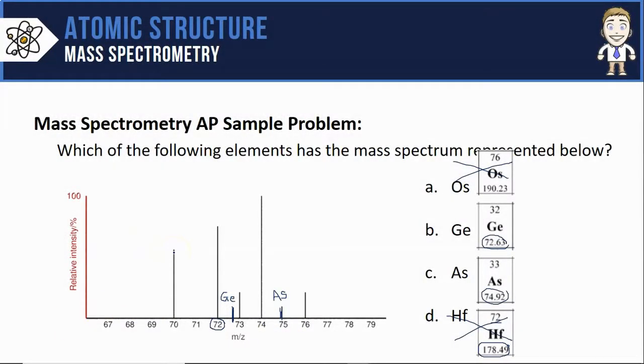So to make the choice between germanium and arsenic, just remember our rule that the average atomic mass will be closest to the tallest, most abundant peaks. And here, there's three very abundant isotopes.